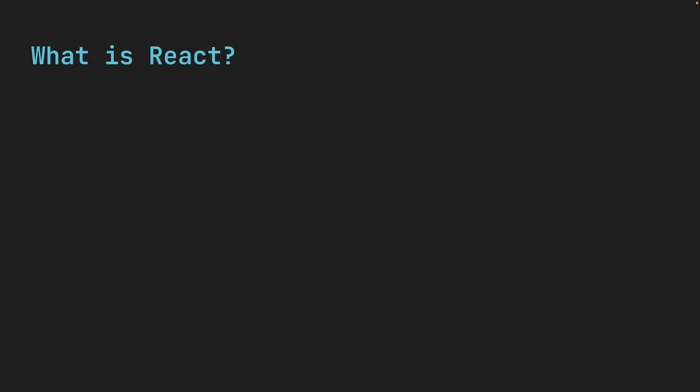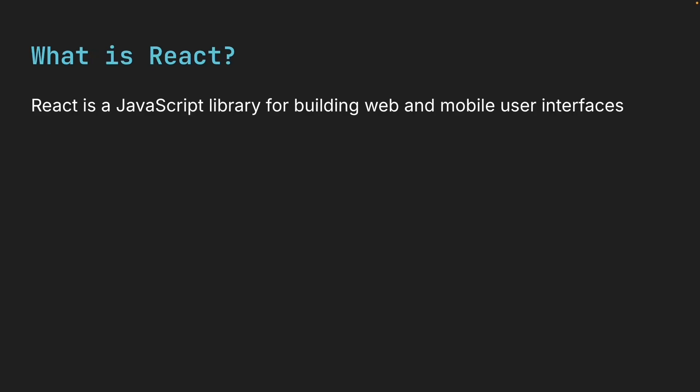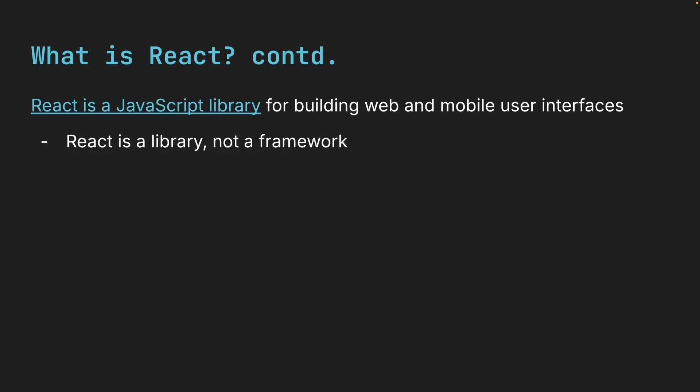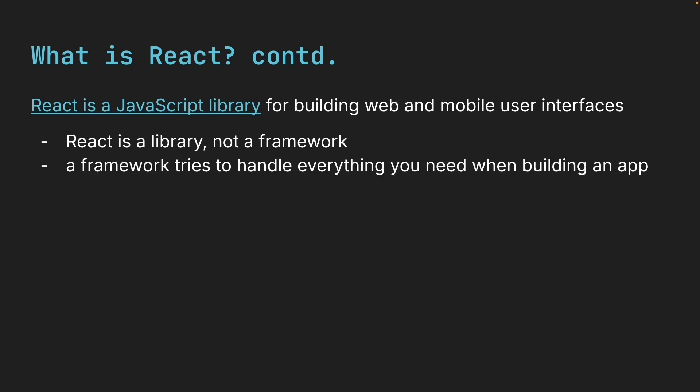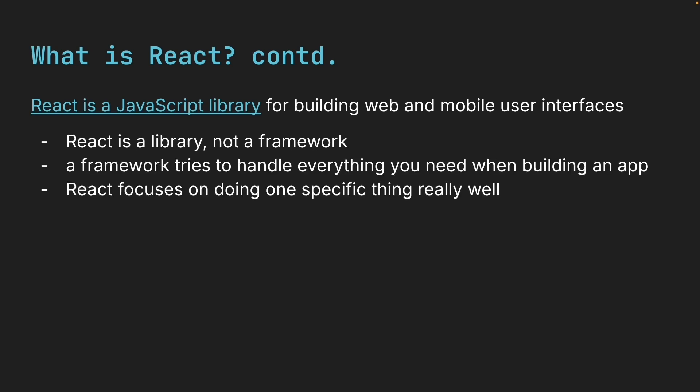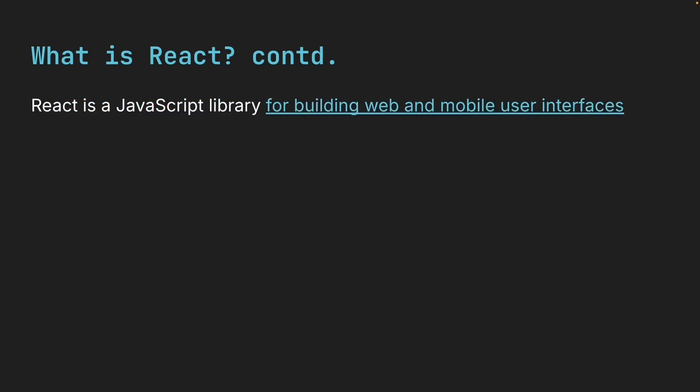So what is React? React is a JavaScript library for building web and mobile user interfaces. There are two key points about this definition. The first part is, React is a JavaScript library. This is important because React is a library and not a framework. While a framework tries to handle everything you might need when building an app, React is a library that focuses on doing one specific thing really well. And the second part, for building web and mobile user interfaces, tells us what that is.